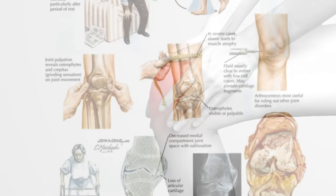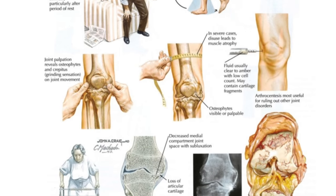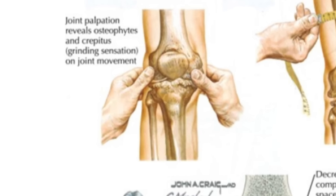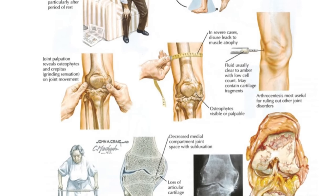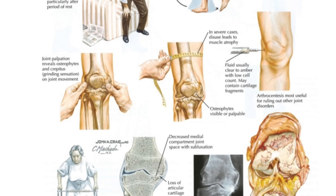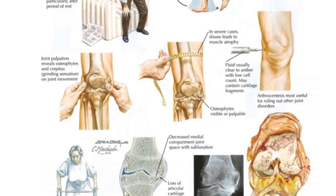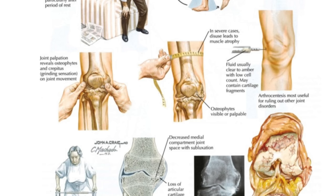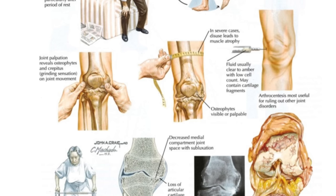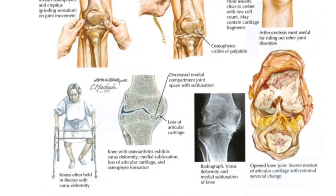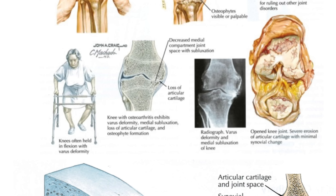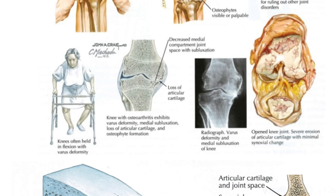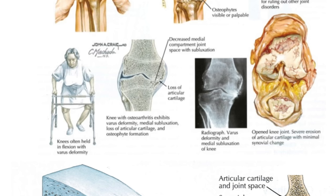Osteoarthritis is degeneration of the joint in general, and specifically the cartilage gets degenerated. You start to form things called osteophytes — basically new bone where there's not supposed to be bone, on the edge of the joint. And then subluxation, which I mentioned, is shown in the third row of images — the femur is not over the tibia straight up and down, and you can see the same thing on the X-ray.